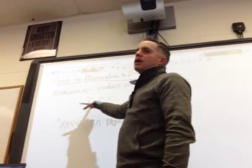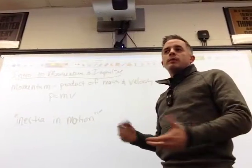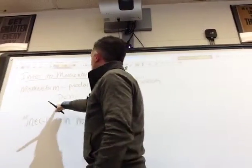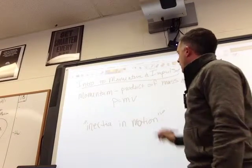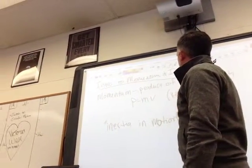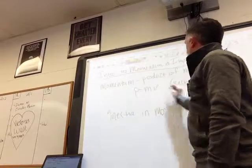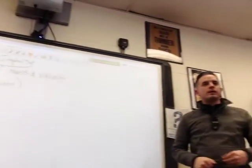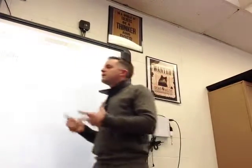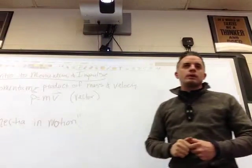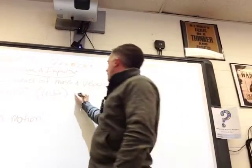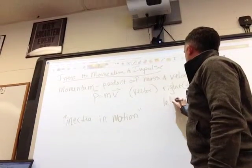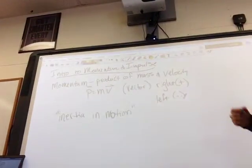Momentum is P — we can't call it M because mass is M. So we got P equals MV. Now this is really important: it is a vector. We should be putting vector symbols on top of it. The direction of velocity matters; it's very important. Typically we've always said that to the right is positive, and to the left is negative, and we're going to keep that.